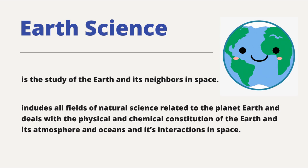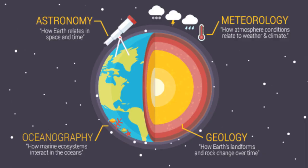Many different sciences are used to learn about the Earth. However, there are only four basic areas of Earth Science. These are geology, meteorology, oceanography, and astronomy. Astronomy tackles how the Earth relates in space and time. Meteorology talks about how atmospheric conditions relate to weather and climate. Oceanography shows us how marine ecosystems interact in the oceans, and geology addresses how Earth's landforms and rock change over time. These four sciences collectively seek to understand Earth and its neighbors in space.